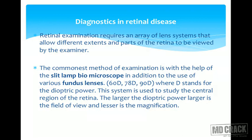The 'D' in these lenses stands for the dioptric power of the lens. The larger the dioptric power, the larger is the field of view and the lesser is the magnification. For example, the 60D gives the highest magnification but the least field of view, whereas the 90D gives a larger field of view but less magnification.